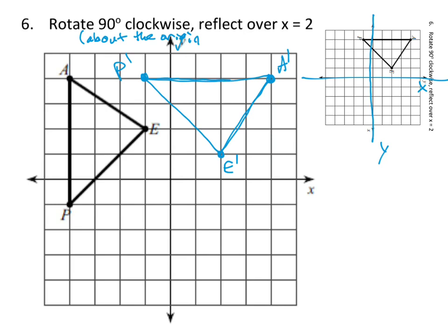What I'd like for you to do is if you happen to have another color or another writing utensil, see if you can switch. Because that'll help show the different steps in the process. Because now what we need to do is reflect over x equals 2. First step in doing the correct reflection is drawing the correct line that you're reflecting over. So go ahead and see if you can draw x equals 2.